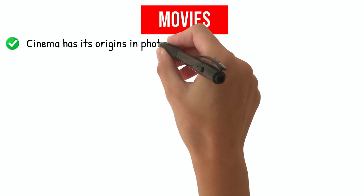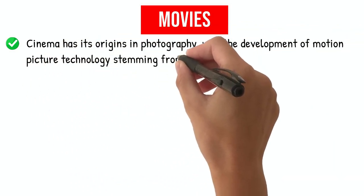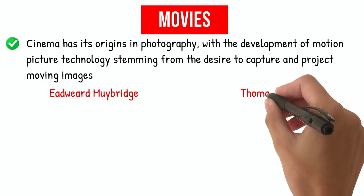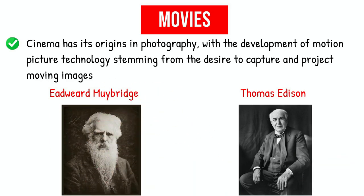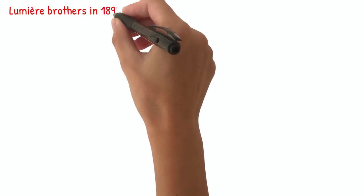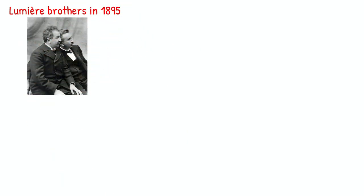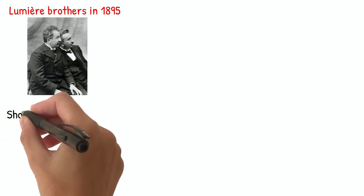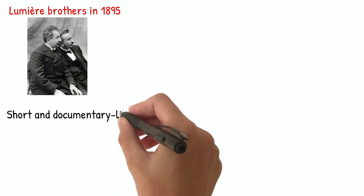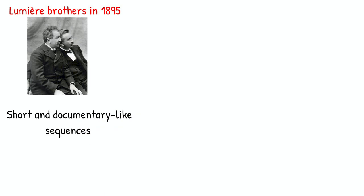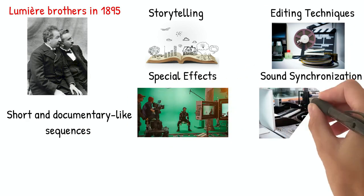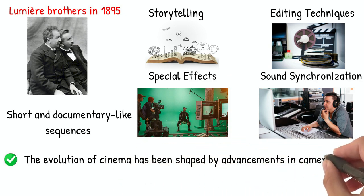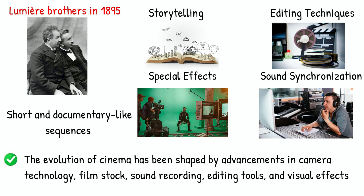Movies: Cinema has its origins in photography, with the development of motion picture technology stemming from the desire to capture and project moving images. In the late 19th century, pioneers such as Edward Muybridge and Thomas Edison experimented with motion studies and the creation of moving image devices. The invention of the cinematograph by the Lumiere brothers in 1895 marked a significant milestone, allowing for the recording of moving pictures. Early films were often short, documentary-like sequences capturing everyday scenes. Over time, filmmakers began to experiment with storytelling, editing techniques, special effects, and sound synchronization. The evolution of cinema has been shaped by advancements in camera technology, film stock, sound recording, editing tools, and visual effects.